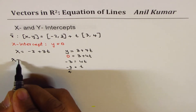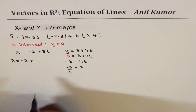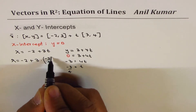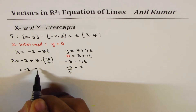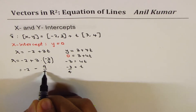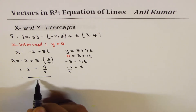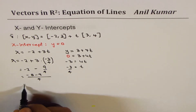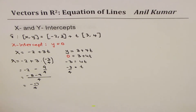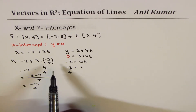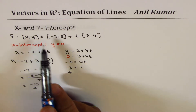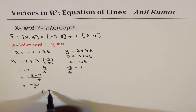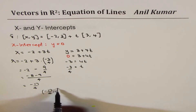So we could say x is equal to minus 2 plus 3 times minus 3 over 4. What we get is minus 2 minus 9 over 4. Taking a common denominator of 4: minus 8 minus 9 gives us minus 17 over 4. Therefore the x-intercept for the given equation will be (-17/4, 0).